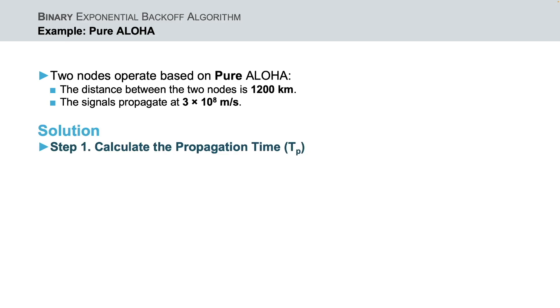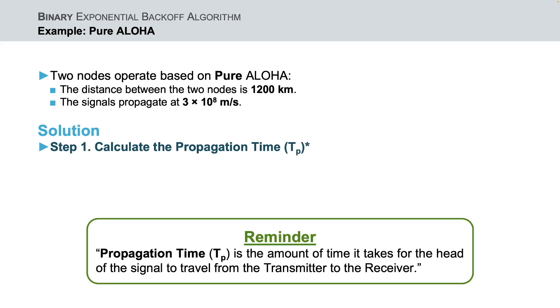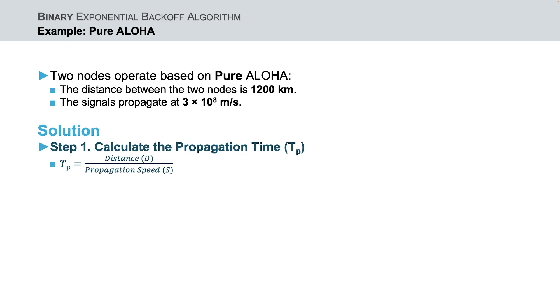Well, to obtain the waiting backoff time for each transmitter, first we need to calculate the propagation time for this scenario. A parenthesis here to remind you that the amount of time that it takes for the head of the signal to propagate from one end of the shared medium to the other is called the propagation time, or t_p. The propagation time can be obtained from the distance between two nodes and the propagation speed, as it can be seen here. If we apply the values of these parameters, we obtain 4ms for the propagation time.